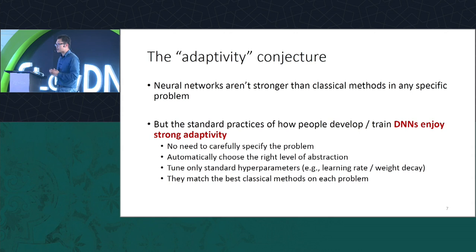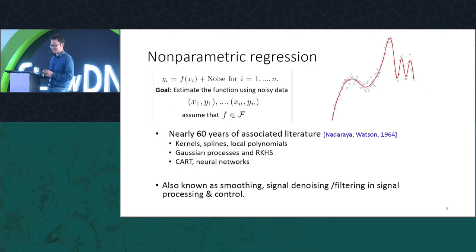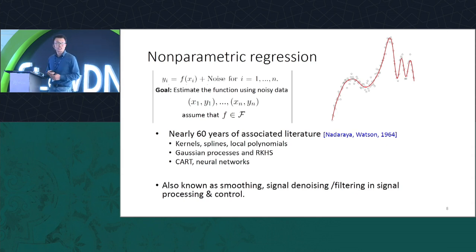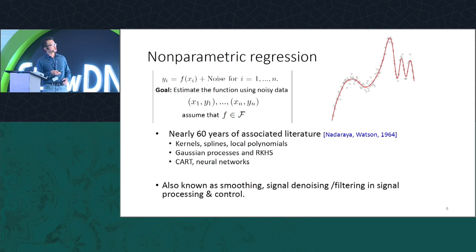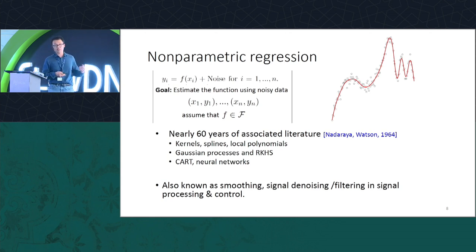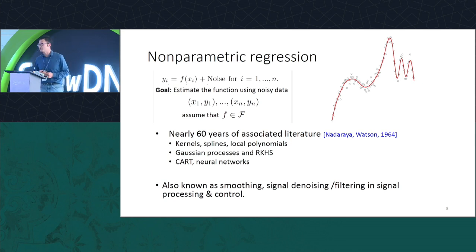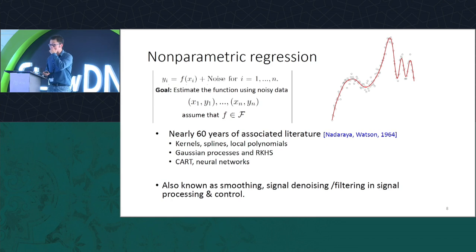Although we are focusing on a very small family of problems in this initial work, we focus on the classical problem called nonparametric regression. Suppose data comes from some signal plus noise, and we assume the underlying function comes from some smooth family — for example, twice differentiable — and we observe this function plus IID sub-Gaussian noise. This is a problem that has been studied for more than 60 years.